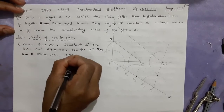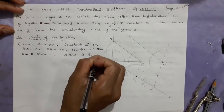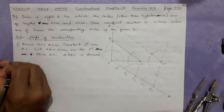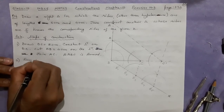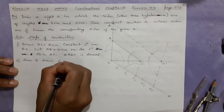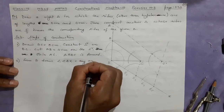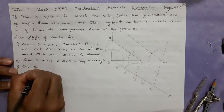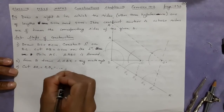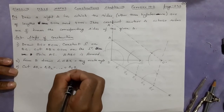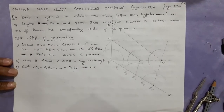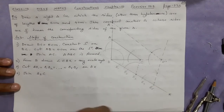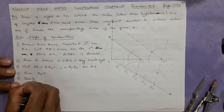Join AC — triangle ABC is formed. Number two — from B draw angle CBX equal to any acute angle. Cut BB1 equal to B1B2 equal to ... equal to B4B5 on BX. Next step: join B3 to C.